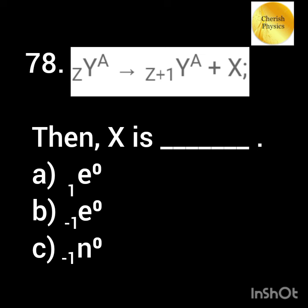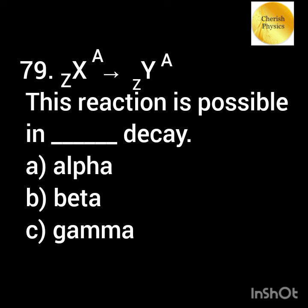Find the value of x in the given nuclear reaction. The given nuclear reaction is possible in which type of decay?